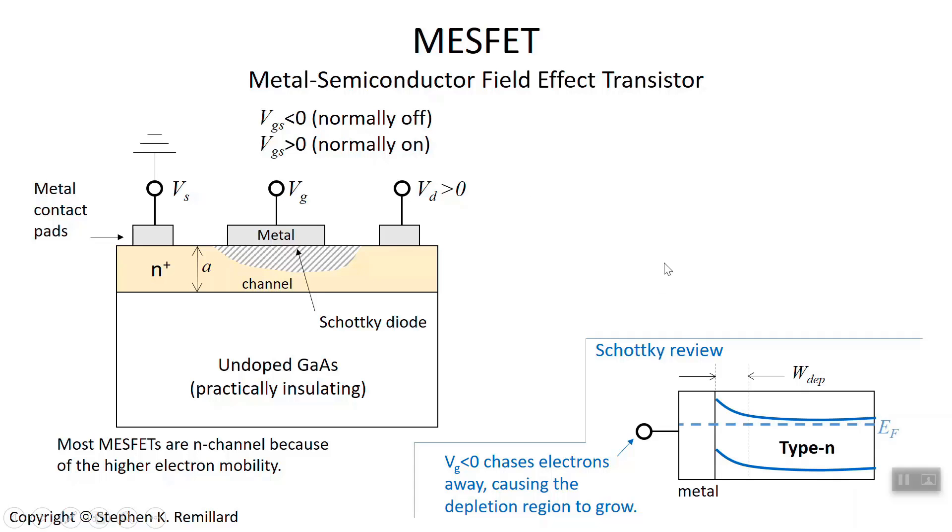Let me review the Schottky barrier diode. If this is the gate with the metallic pad and the type N semiconductor, the bands in the type N semiconductor will bend up as they approach the interface with the metal. If you put a negative voltage on the gate electrode, they'll bend up even more. There'll be a depletion region. They'll become depleted because you put a negative potential on this gate. Electrons are chased away from the interface.